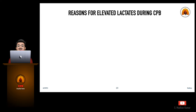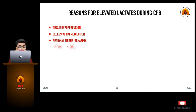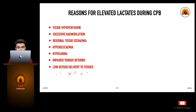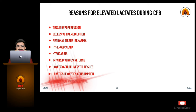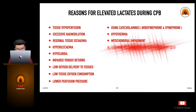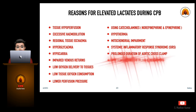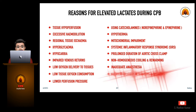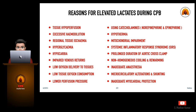Reasons for elevated lactate during cardiopulmonary bypass include tissue hypoperfusion, excessive hemodilution, regional tissue ischemia, hyperglycemia, hypercarbia, impaired venous return, low oxygen delivery to tissues, low tissue oxygen consumption, lower perfusion pressure, catecholamine use, hyperthermia, mitochondrial impairment, systemic inflammatory response syndrome, prolonged aortic cross-clamp duration, non-homogeneous cooling and rewarming, inadequate anesthesia, microcirculatory alterations and shunting, and inadequate myocardial protection.